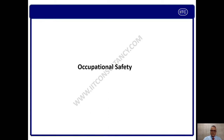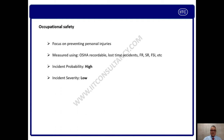We need to understand the difference between occupational safety and process safety. Occupational safety focuses mainly on preventing personal injuries — leg injury, finger injury, hand injury, face injury, eye injury, and any body part injuries. This can be measured as per the OSHA standard in LTI (loss time injuries), FR (frequency rate), SR (severity rate), and FSI (frequency severity index).